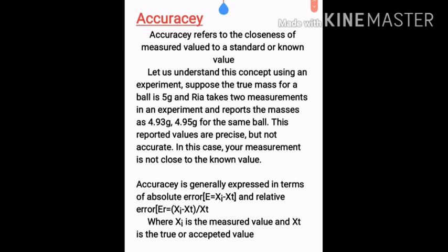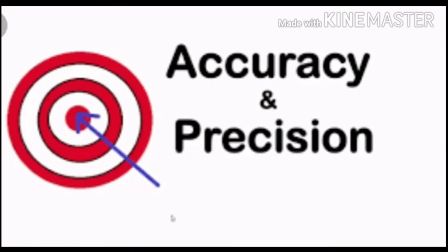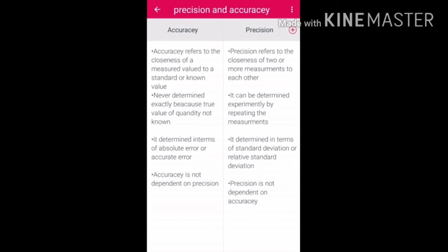Accuracy is generally expressed in terms of absolute error: Absolute error = xi − xd, and relative error: Er = (xi − xd) / xd. Here, xi is the measured value and xd is the true (known) value.